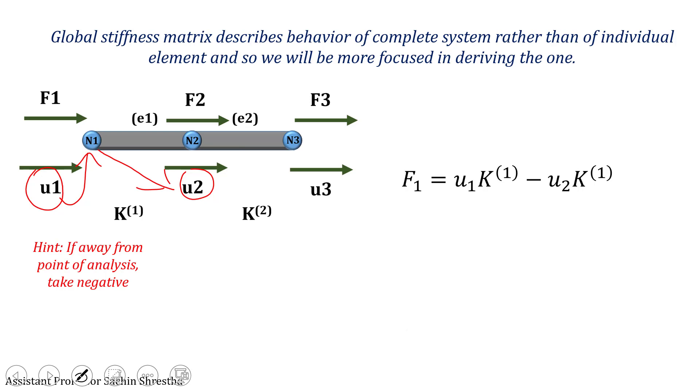Likewise, we can write the relation for force F3 as minus U2 times K2 plus U3 times K2. Since U3 is close to node 3 and U2 is away from it, we take U2 to be negative and U3 to be positive.